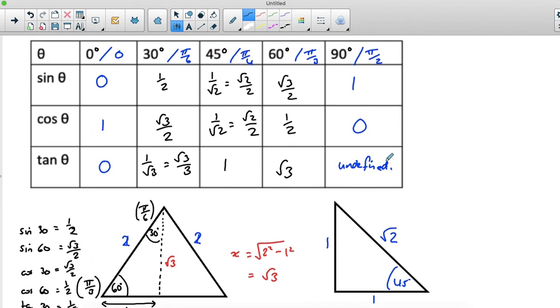Now those need to be either committed to memory or you need to be able to quickly sketch in an exam these two triangles. You need to be able to sketch this triangle here and you need to be able to sketch this triangle here, one one 45 degrees root two. If you can sketch those two triangles in an exam then you can get all the rest of these ratios quite quickly.